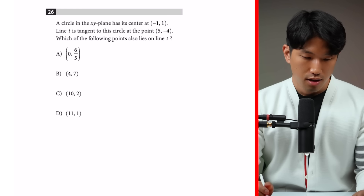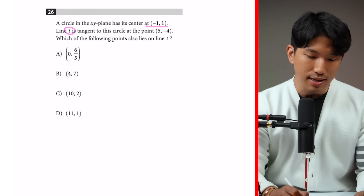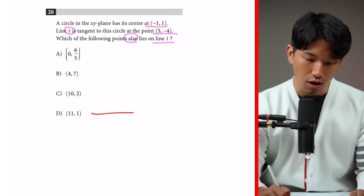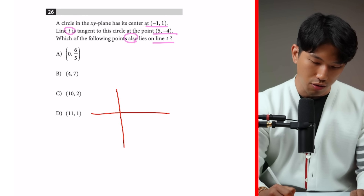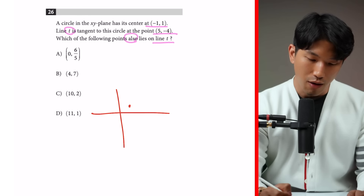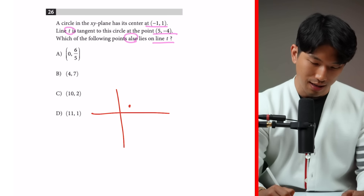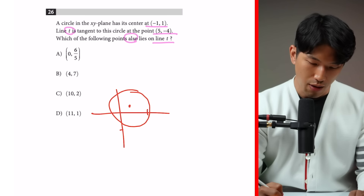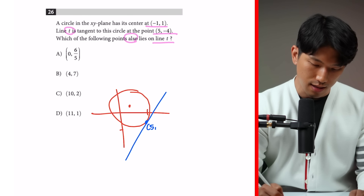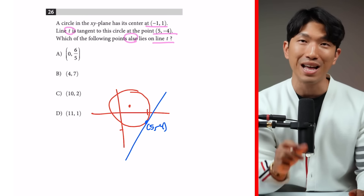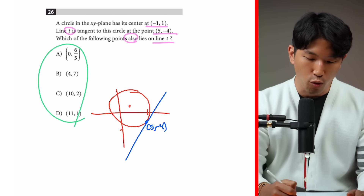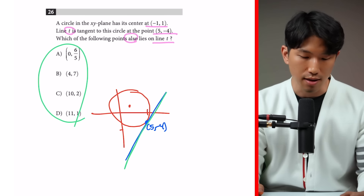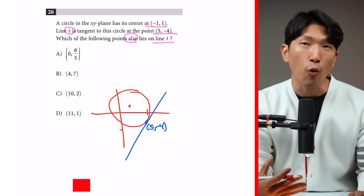Question three: a circle in the XY plane has its center at (-1, 1), and line T is tangent to the circle at point (5, -4). Which of the following points also lies on line T? Let's visualize: the center is at negative 1 and 1, and the tangent point is at 5 and negative 4. Tangent means the line touches the circle at exactly one point. We need to find which of the four answer choices also lies on this line.